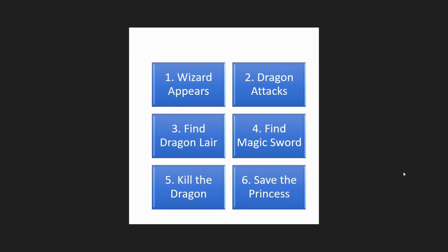In the second version, we have a wizard appearing first, followed by a dragon attack. Perhaps the wizard came to warn about a dragon attack, and then the dragon attacks as he warned about. Or perhaps the wizard showing up is the reason the dragon attacked — if the wizard had not shown up, the dragon would have left the hero's village alone. Now we have finding the dragon's lair first — perhaps the magic sword is located within the lair. Or perhaps the protagonist goes to the dragon's lair, realizes he can't defeat the dragon, gets defeated, and then has to find the magic sword, then kill the dragon, then save the princess.